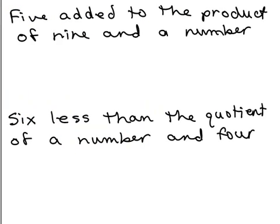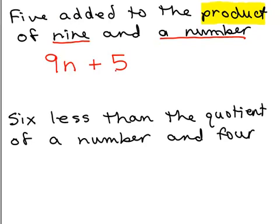Try these two on your own. Put the video on pause and see if you could write this as an expression. And go ahead and let the number be n. Okay. So what do we have? Five added to the product of nine and a number. So we're adding five to something, so I have to do this part first. The product, remember, means multiplication. And what are the two parts? I've got nine and a number. So how do I write the product of nine and a number? I do nine times n, which is 9n. And then it says I'm going to add five to that, so then I add five. That's what you should get.